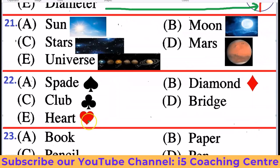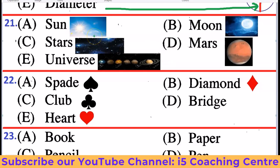Next: Sun, Moon, Stars, Mars, Universe. Universe means all of these together — Sun, Moon, Stars, and Mars are all parts of the Universe. So the odd one out is Universe, as it is the whole and the others are its parts.